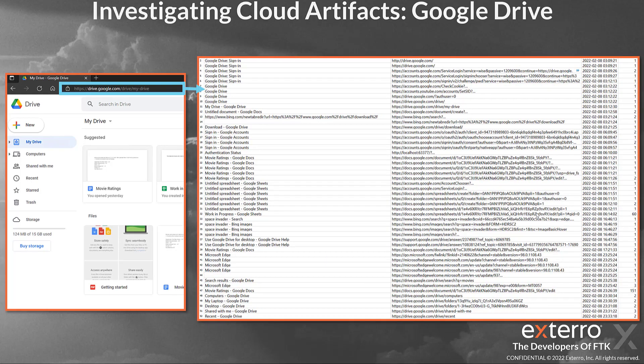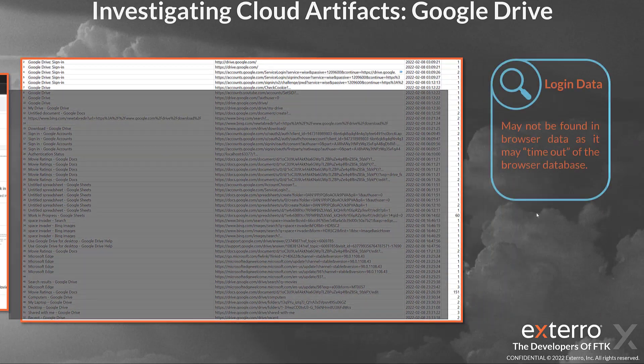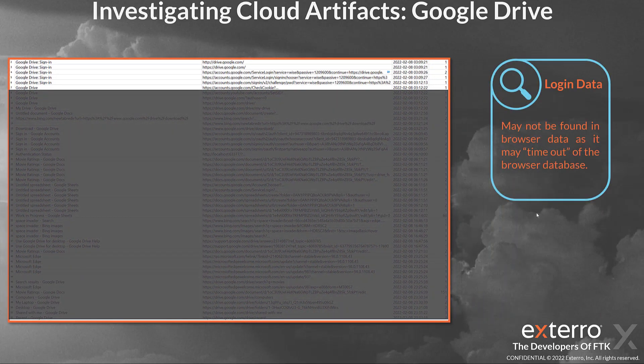Let's start with browser data — what can you get out of your browser history related to Google Drive and user activity? Starting with login data: it'll say Google Drive sign-in, though this may not always be present in your browser data because your browser may store a limited amount of history by default. And if it's been a while since they've logged in, or if they log into the browser itself using Chrome or Chromium Edge, then this may not be recorded.